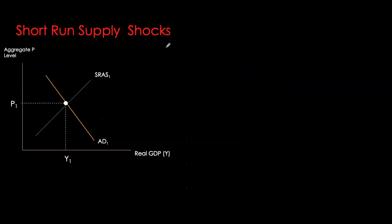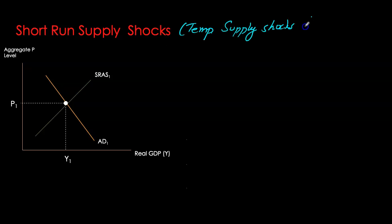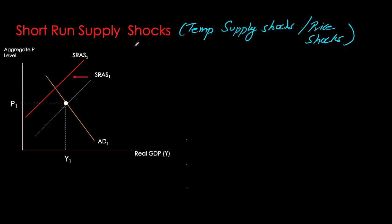Next, let's look at supply shocks. For now, I'm going to assume it's a short-run supply shock, also referred to as temporary supply shocks. These are also sometimes referred to as price shocks because short-run aggregate supply shifts primarily because of input prices. Let's first assume we have a negative supply shock or a negative price shock. It causes your short-run aggregate supply curve to shift to the left. It could be wages going up, commodity prices going up, or productivity declining.